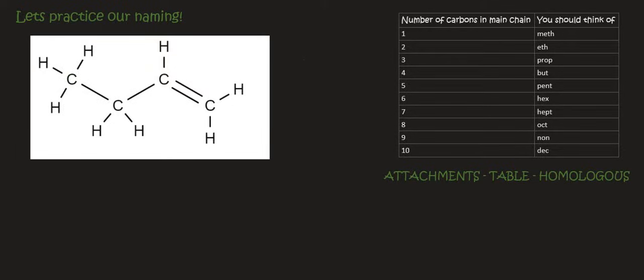For this one, we've got 4 carbons in the main chain. And so that's going to be bute. And then for the homologous series, we know that this is an alkene because there's a double bond. Now that alkene takes place on carbon number 1. So we can say but-1-ene.